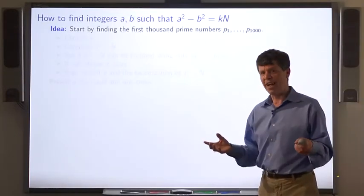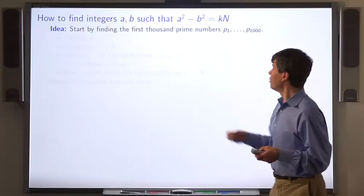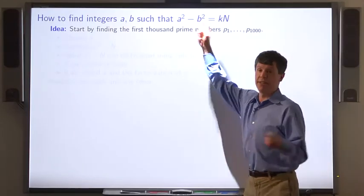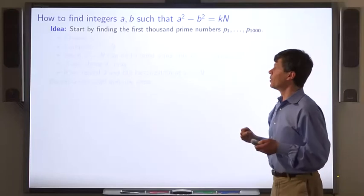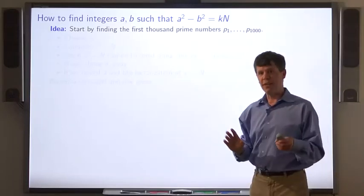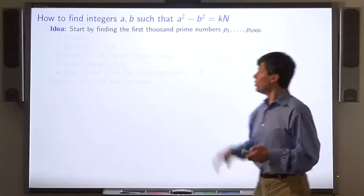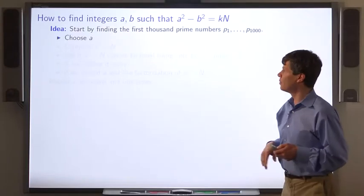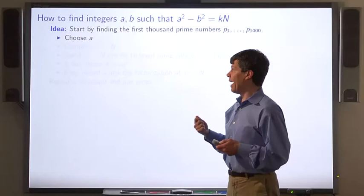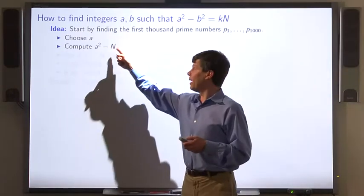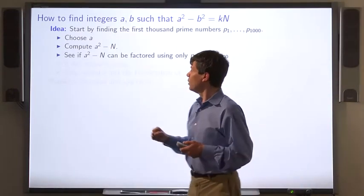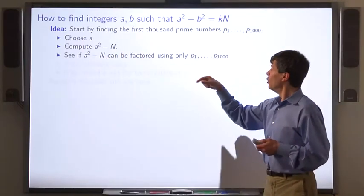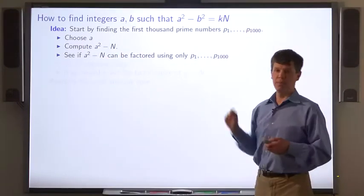How can we find integers a and b such that a squared minus b squared is even an integer multiple of n? Well, here's the strategy. Start by finding, say, the first thousand prime numbers. Now choose a and compute a squared minus n. We see if a squared minus n can be factored using only these prime numbers.